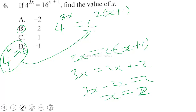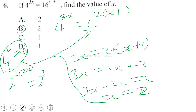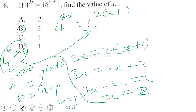Alternatively, we can rewrite everything in base 2. Then 4^(3x) becomes 2^(6x) and 16^(x+1) becomes 2^(4(x+1)). Equating exponents: 6x = 4x + 4, so 2x = 4, giving x = 2 — the same result.